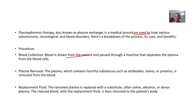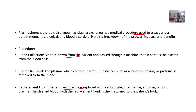The blood is drawn from the patient and passed through a machine that separates the plasma from the blood cells. The plasma, which contains harmful substances like antibodies and toxins — the proteins causing the problems — is removed from the blood. The removed plasma is then replaced with a substitute, often saline, albumin, or donor plasma.